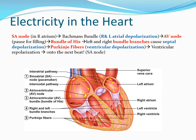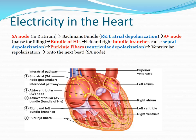If my SA node decides that my heart rate is going to be 74, it is going to fire 74 times a minute and trigger this electrical cascade 74 times a minute. Once the firing has begun in the SA node, the electricity goes from the SA node throughout Bachmann's bundle, throughout both the right and left atria, and ends up in the AV node. Both the right and left atria have just contracted — sending electricity from the SA node to the AV node causes right and left atrial contraction, squeezing blood from the atria down into the ventricles.